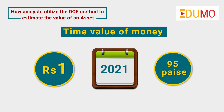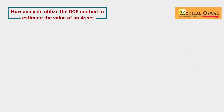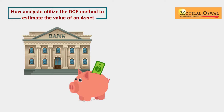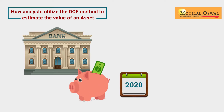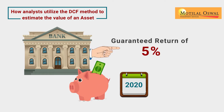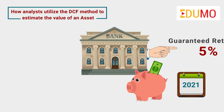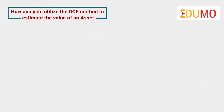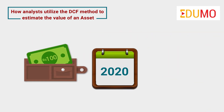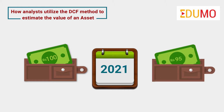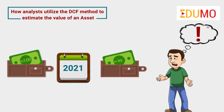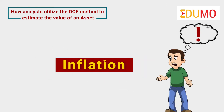Let us explain this with the help of an example. If you have rupees 100 in your savings bank account today and the bank is offering a guaranteed return of 5%, then after one year that 100 will become rupees 105. But if you kept that money in your wallet and left it there for one year, the present value would then become rupees 95.